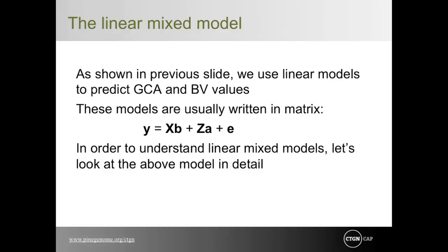The traditional BLUP procedure to predict breeding values is based on individual tree phenotypes and the genetic relationship matrix A derived from individual tree pedigrees. The A matrix must be known and can be estimated if enough genetic markers exist. BLUP is performed using matrix algebra. The type of model used depends on the nature of the trait: linear mixed models for continuous response variables such as growth, and generalized linear mixed models for binary traits such as disease incidence. The statistical model chosen is the foundation of progeny test analysis and must be defined with utmost care.